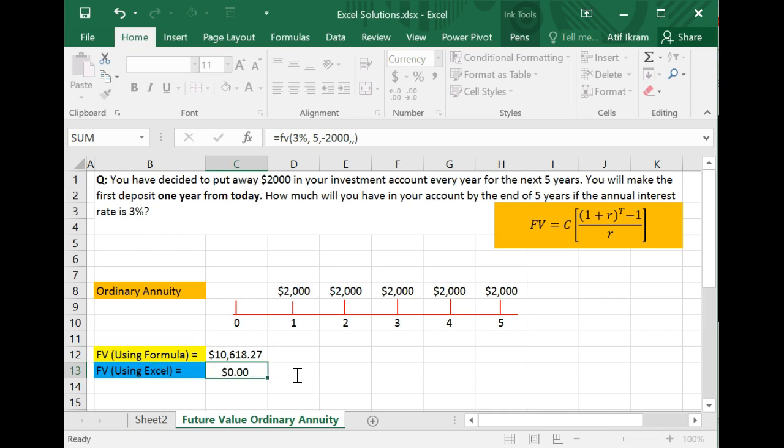And so now if you enter, you get the exact same answer which is 10,618.27. As you can see, this is far easier because if you look at the formula, all you had to do was enter the rate, the number of time periods, and then the constant payment or the constant deposit that you're making. And so this is how more conveniently you can figure out the future value of an ordinary annuity in Excel.